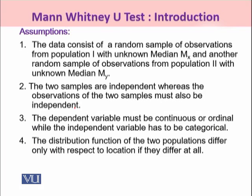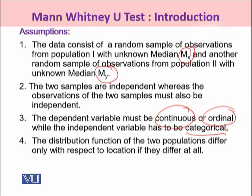To apply the Mann-Whitney U-test, certain assumptions must be fulfilled. The first is that the data consists of a random sample of observations from Population 1 with unknown median MX, and an independent random sample from Population 2 with unknown median MY. The two samples must be independent, and the observations within each sample must also be independent. The dependent variable must be continuous or at least ordinal, while the independent variable must be categorical. Finally, the distribution functions of the two populations should differ only in location, if they differ at all — meaning the two populations are expected to be similar in shape.